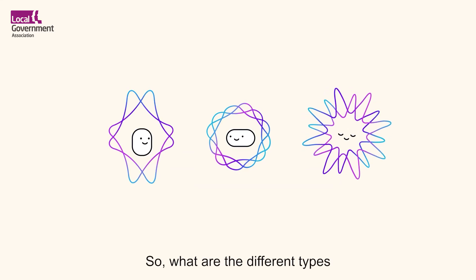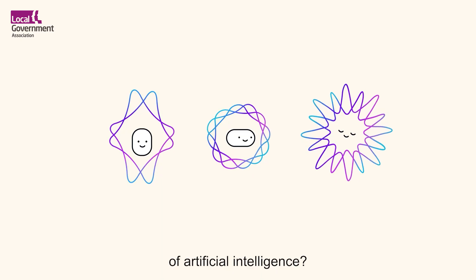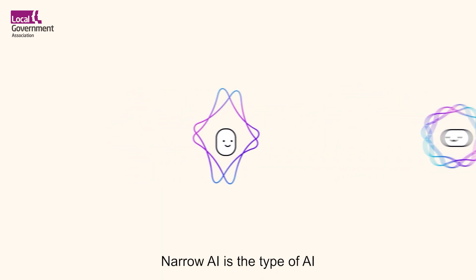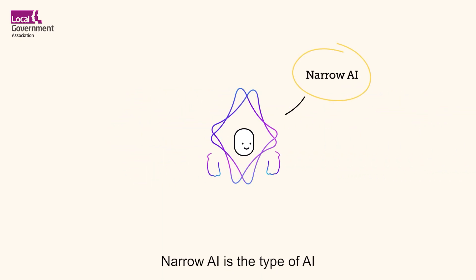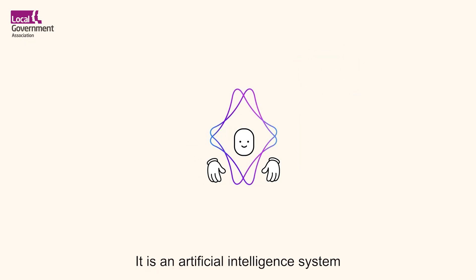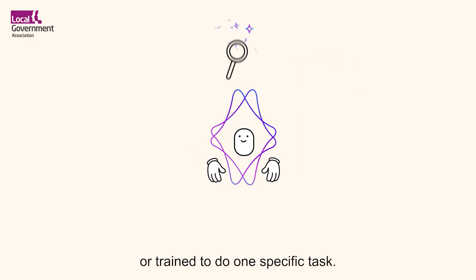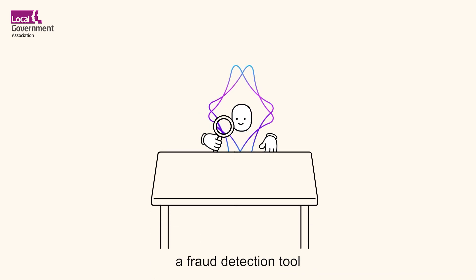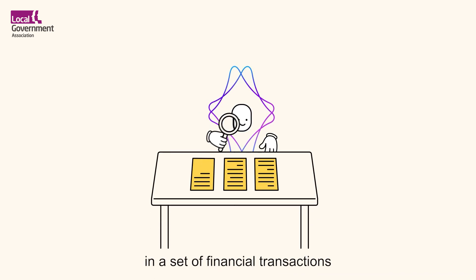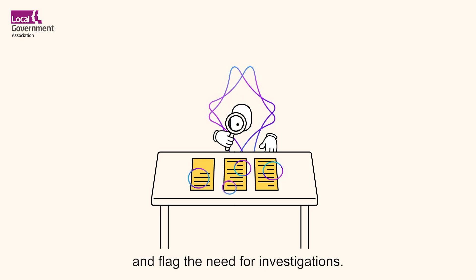So, what are the different types of artificial intelligence? Here are a few examples. Narrow AI is the type of AI that has been around the longest. It is an artificial intelligence system that has been developed or trained to do one specific task. For example, a fraud detection tool might be trained to look for patterns in a set of financial transactions and flag the need for investigations.